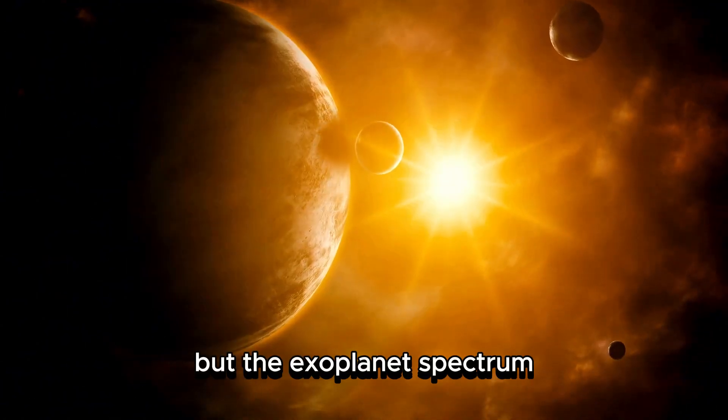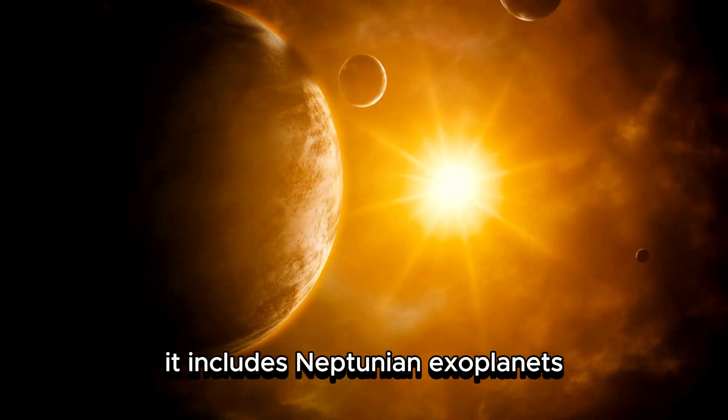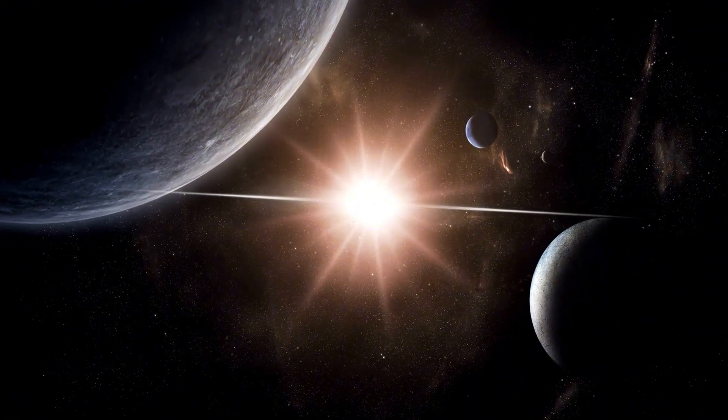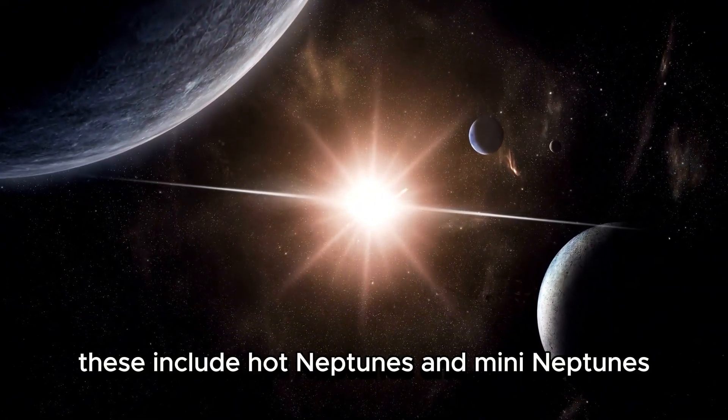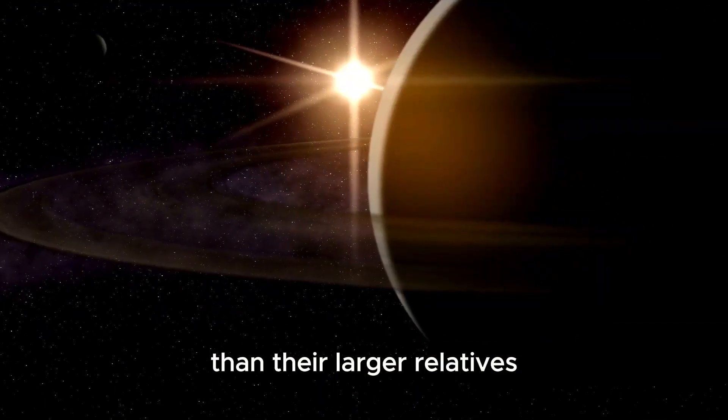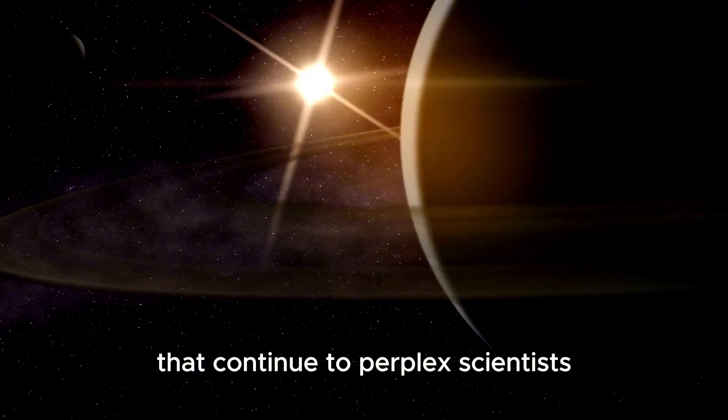But the exoplanet spectrum encompasses more than these titanic bodies, it includes neptunian exoplanets, akin in size to Uranus and Neptune. These include hot Neptunes and mini-Neptunes, smaller counterparts situated nearer to their stars than their larger relatives, cloaked in enigmatic atmospheres that continue to perplex scientists.